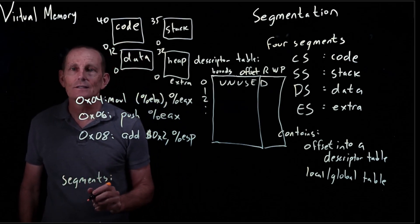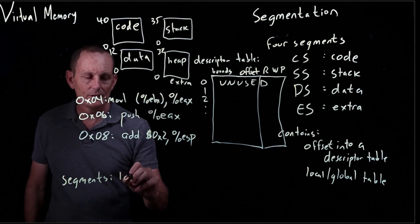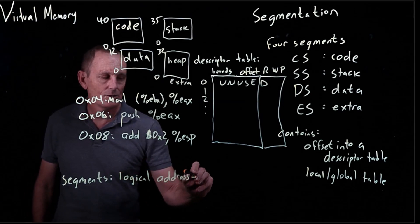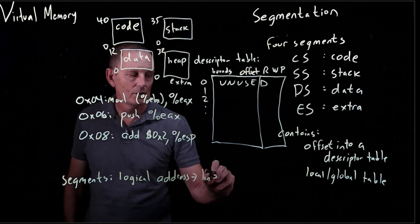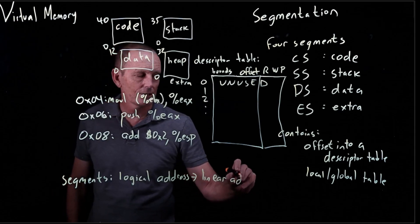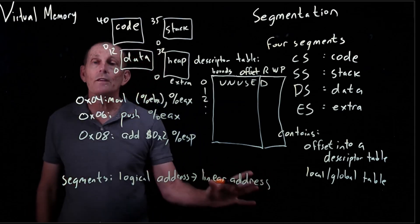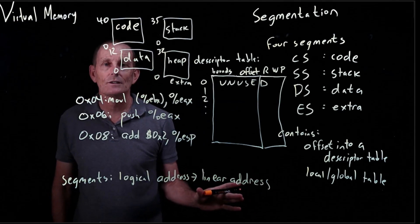Segments take us from a logical address to a linear address. We're going to see in x86 that there's another mapping that can happen after this due to paging.